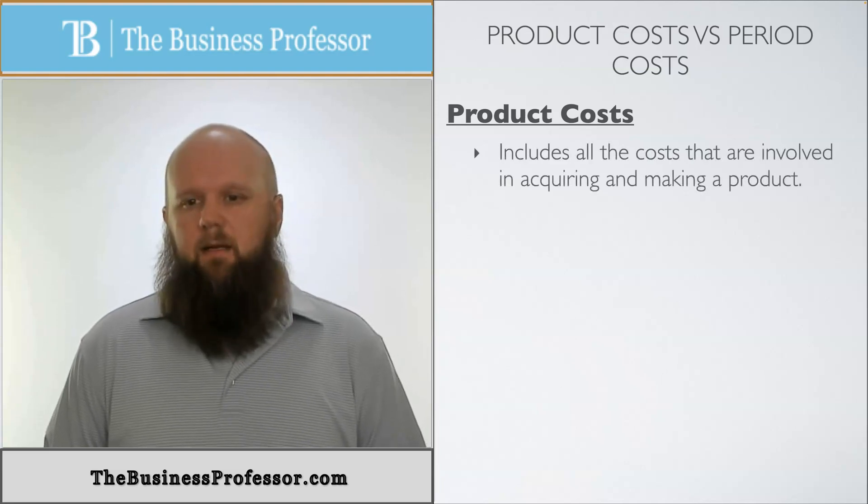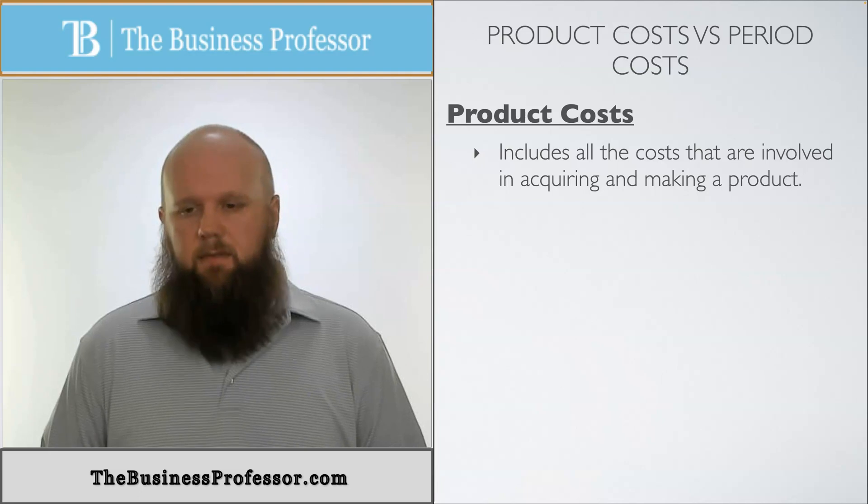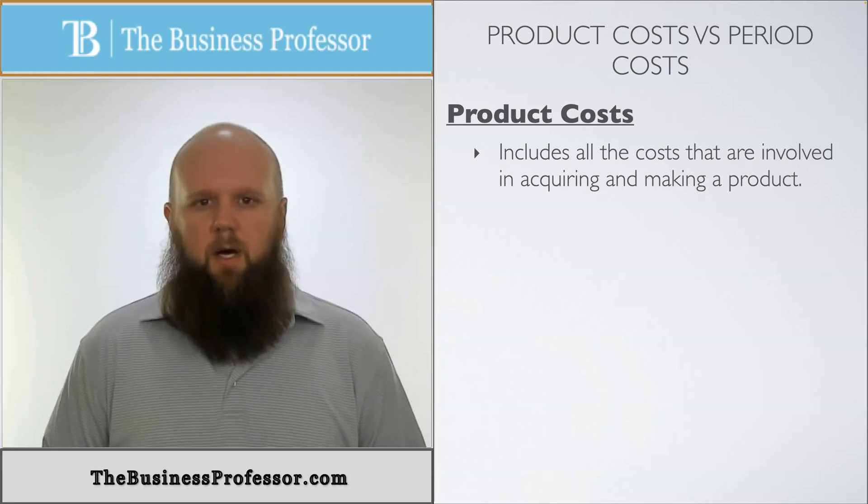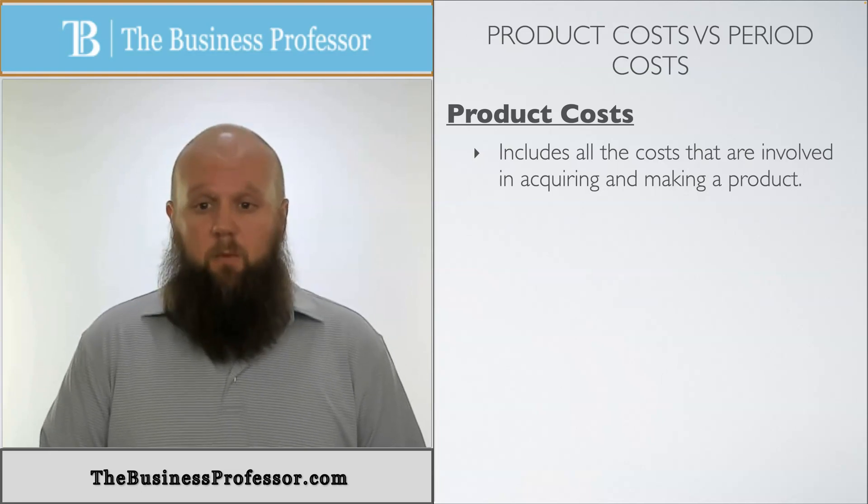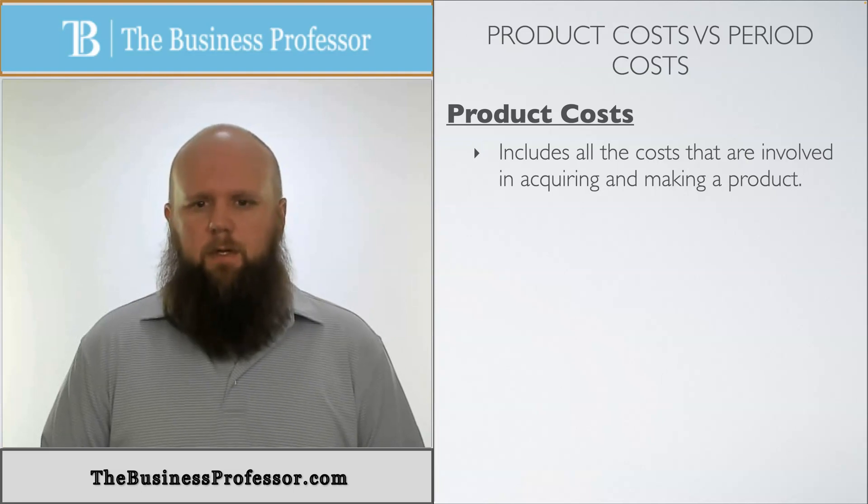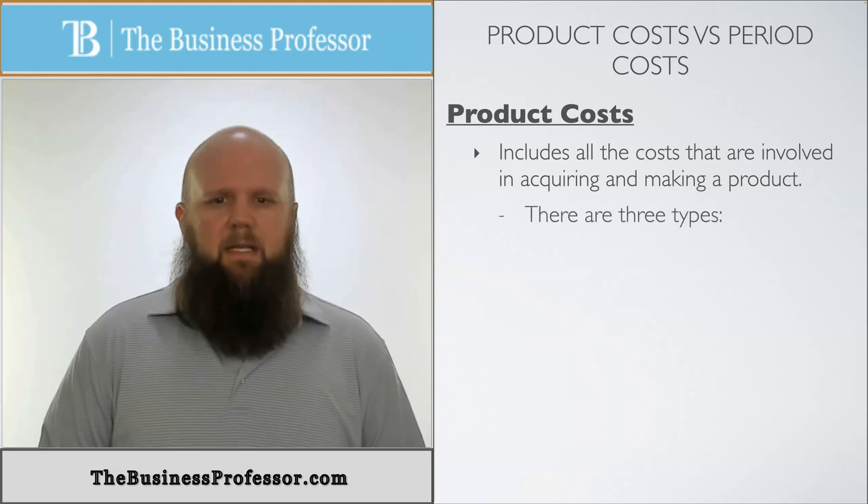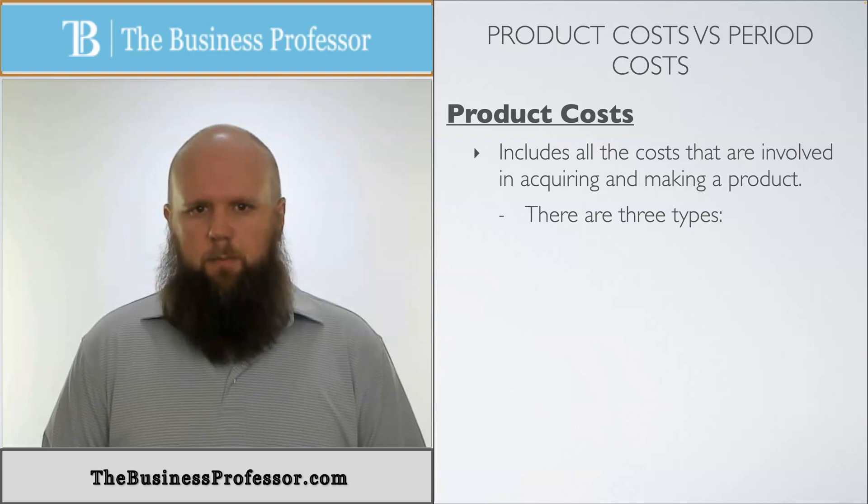Product costs include all the costs that are involved in acquiring and making the product. So these are costs associated with the product. Again, we're really creative with our names. There are three types of product costs, three ways we can break down product costs.